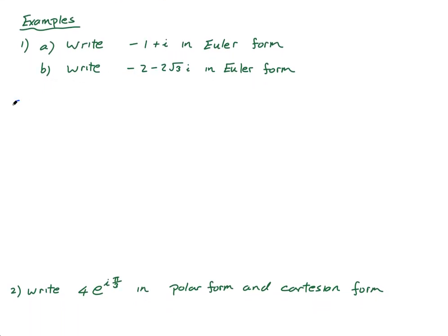We'll do these two to begin with. First: -1 + i in Euler's form. I always draw my diagram. So it's -1 + i, somewhere in the second quadrant. This is 1 on the real axis and 1 on the imaginary axis. I'll call this angle α, and θ is the full angle from the positive real axis.